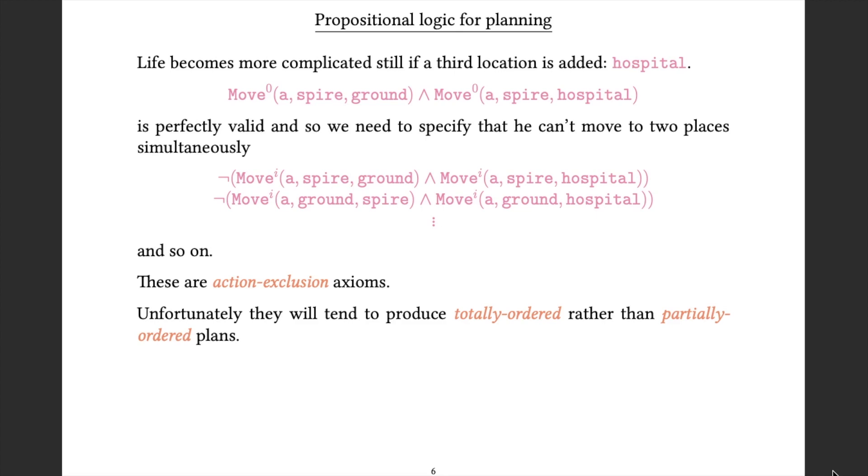Now that's fine, but it tends to give you totally ordered plans rather than partially ordered plans. Remember again the example of putting your shoes and socks on, you don't want a totally ordered plan that specifies in exactly what order this has to happen. You want a partially ordered plan that only constrains things enough such that any plan you do come up with that obeys the ordering constraints results in your goal of having your shoes and socks on.